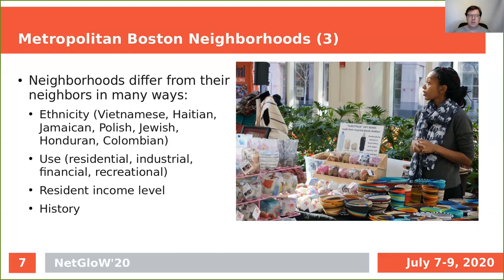Some neighborhoods differ in resident income level, so we can find poor neighborhoods, relatively poor neighborhoods, relatively rich neighborhoods, and pretty much everything in between. And of course neighborhoods differ in their history, mostly in ways that they became or did not become parts of the Boston conglomerate. So let's have a look at some of these neighborhoods at close distance before we engage in digital studies of them.